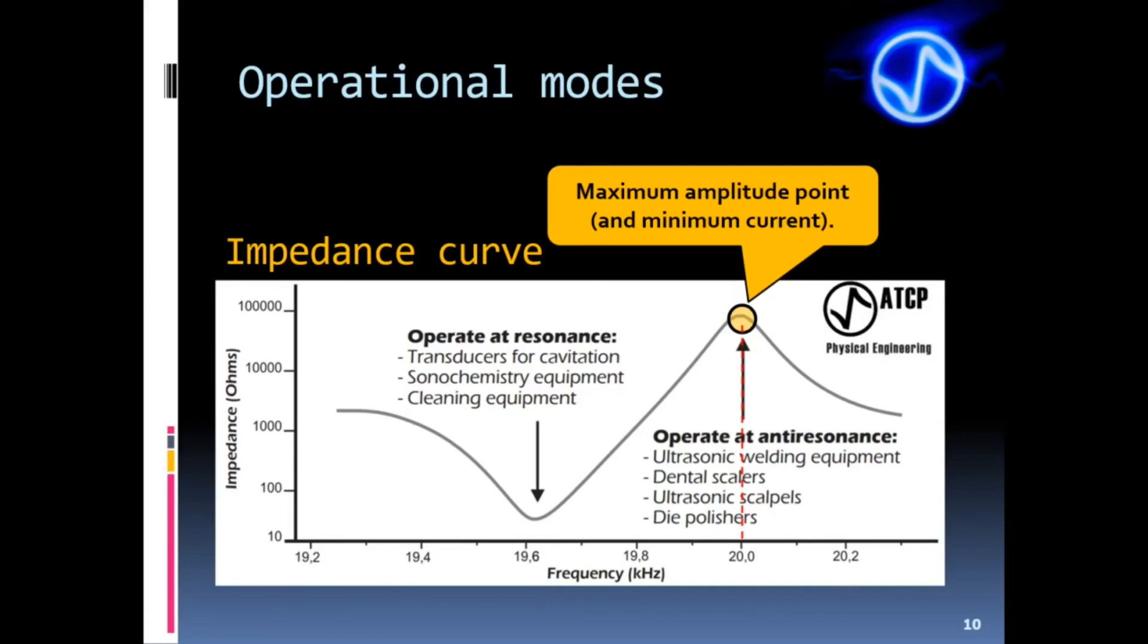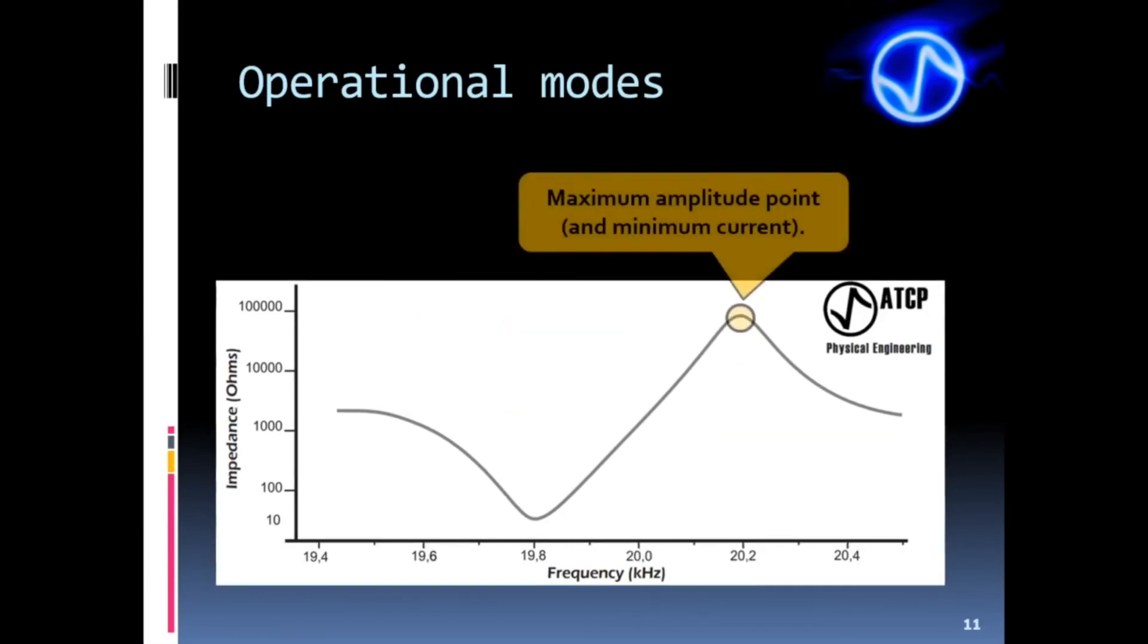In this other example, the stack is not tuned to 20 kilohertz. The maximum impedance does not match 20 kilohertz. So what happens when a generator tries to operate at 20 kilohertz with this stack and it is not able to compensate the frequency deviation? Overload.